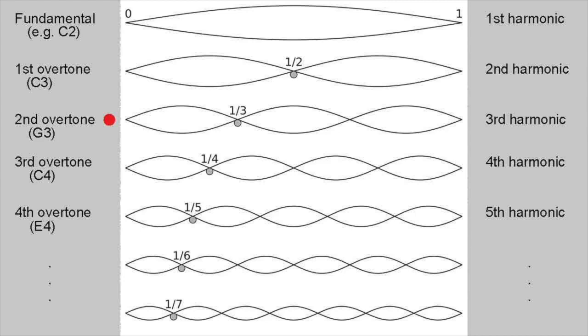The third overtone is another fourth higher, or a full octave above C3, bringing us to C4, or middle C. The fourth overtone is a major third higher than C4, which is E4, and so it goes on.